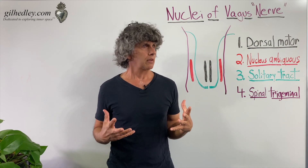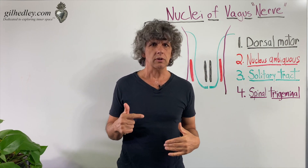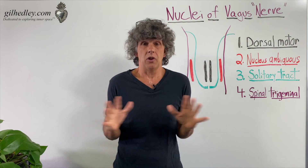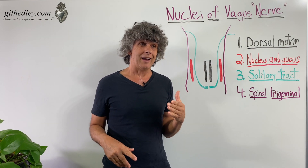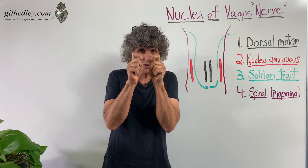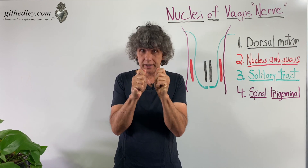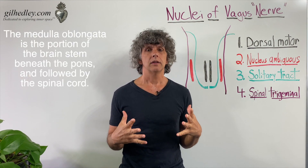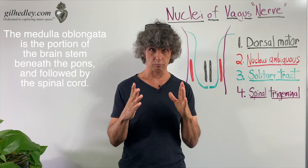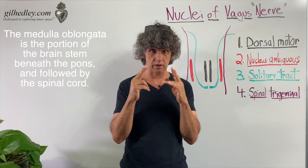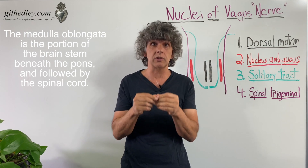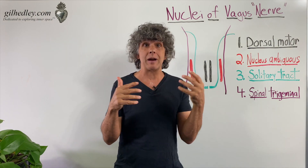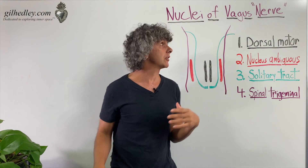The nuclei — a cell has a nucleus. Do we mean the nucleus of the vagus nerve cell? No. By nuclei, I mean the concentrations of cell bodies that are located in the medulla oblongata. The medulla oblongata is part of your brainstem — it's the lower portion of the brainstem before it transitions into the spinal cord. That's where the vagus nerve fibers come from, and I say fibers because there's a lot of them.